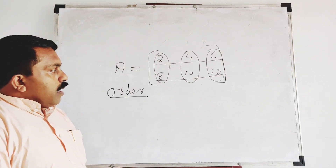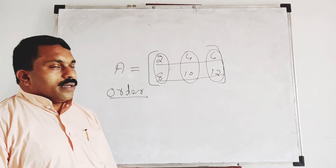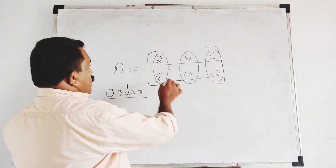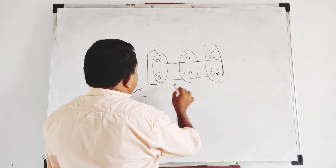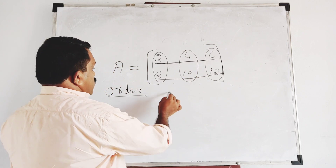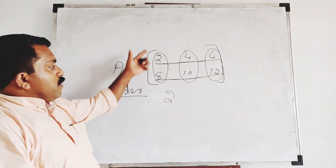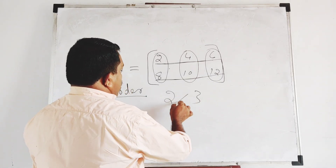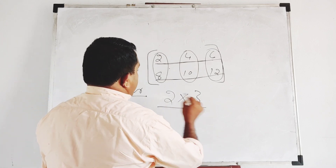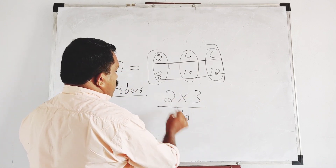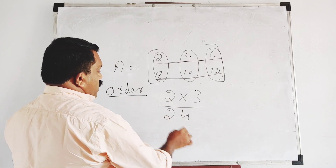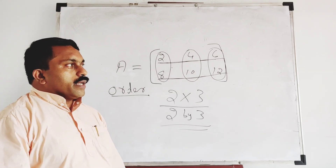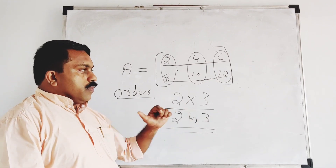Now, what is the order? The order is a common concept. The order of the row is the same. In this example, we have two rows. This is the order of the matrix. We state by 2. The order of the matrix is 2 by 3. We state 2 by 3.